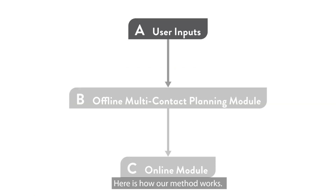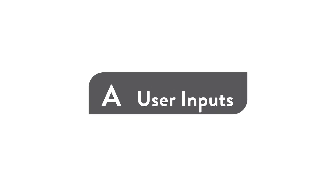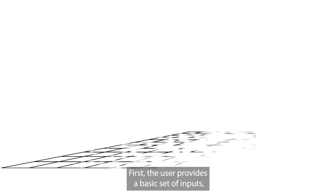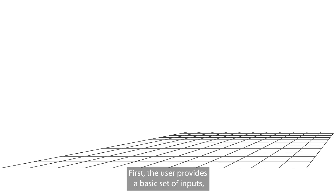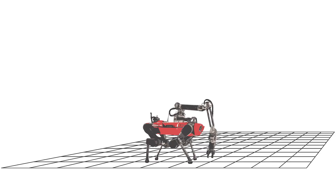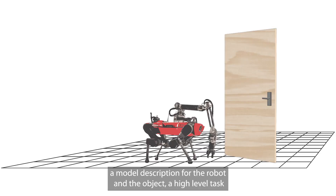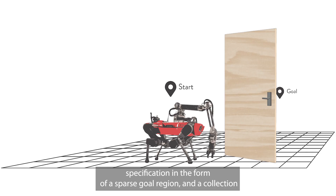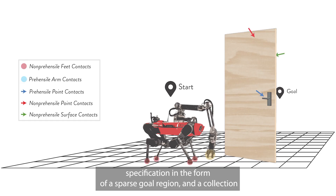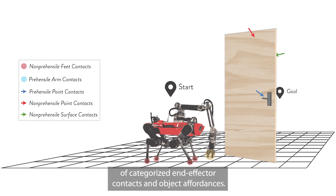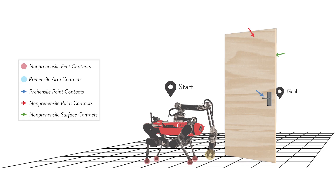Here is how our method works. First, the user provides a basic set of inputs: a model description for the robot and the object, a high-level task specification in the form of a sparse goal region, and a collection of categorized end-effector contacts and object affordances.